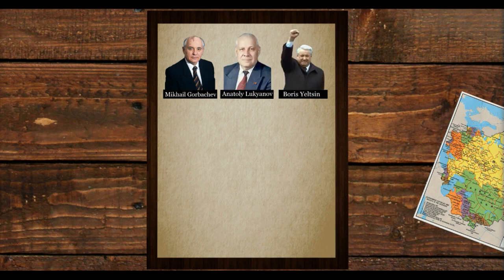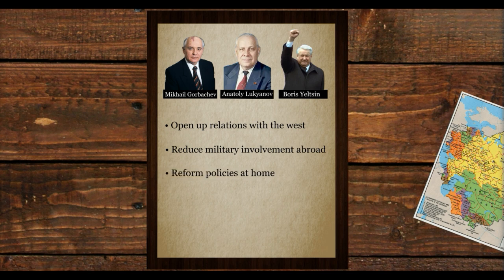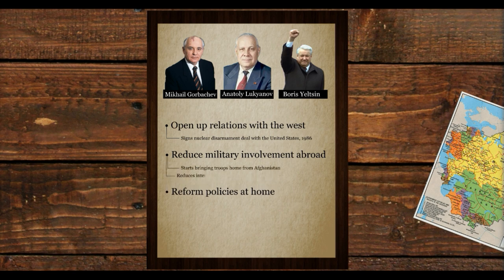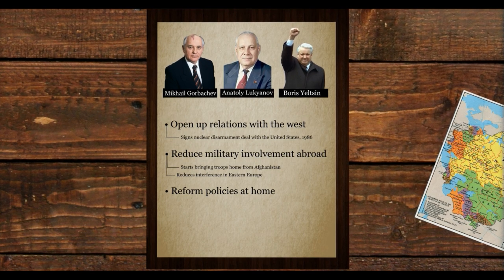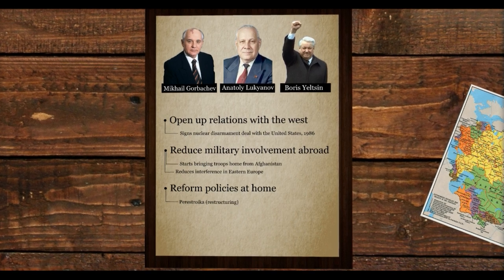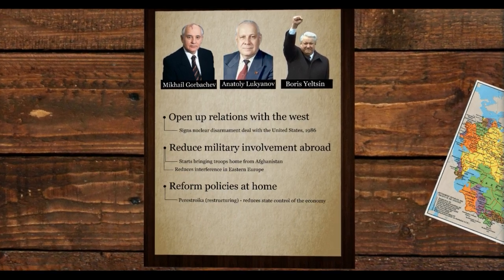Gorbachev was loyal to the vision of the Soviet Union but was also a keen reformist and hired like-minded politicians to his cabinet. With their help he began to push his ideals through Soviet politics, like opening up relations with the West, reducing the country's military involvement abroad, and bringing more liberal domestic policies to Soviet citizens. Gorbachev signed a nuclear disarmament deal with the United States in 1986, began the process to withdraw from Afghanistan, and reduced interference in Eastern Europe. Gorbachev introduced a policy known as perestroika, meaning restructuring, which referred to the economic change from a state-run economy to a more free market system.